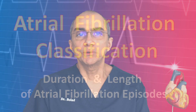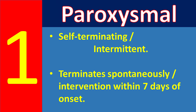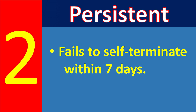Atrial fibrillation is classified according to the duration and length of episodes. Paroxysmal atrial fibrillation is self-terminating or intermittent, reverting to normal sinus rhythm with or without intervention within seven days of onset; episodes may recur with variable frequency. Persistent atrial fibrillation fails to self-terminate within seven days and often requires medications or electrical cardioversion to restore normal sinus rhythm. Generally, atrial fibrillation is considered a progressive disease.